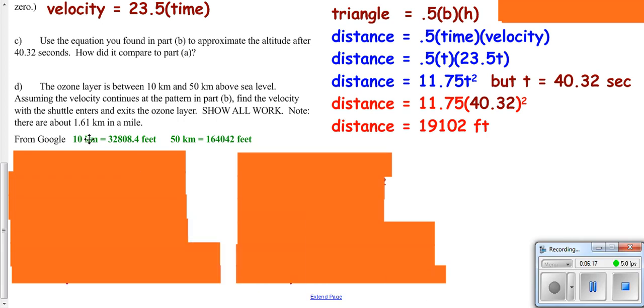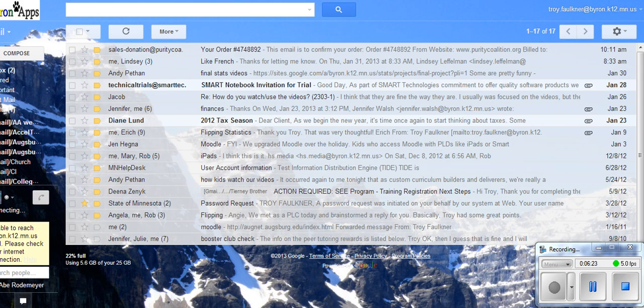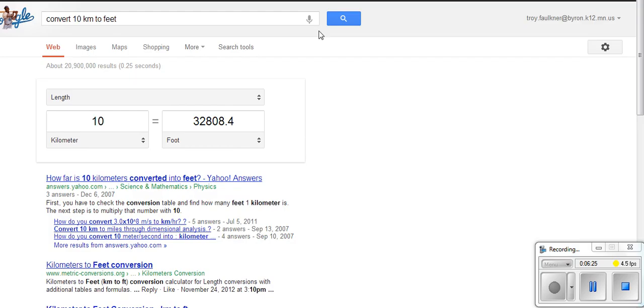The easiest way to convert your units of 10 kilometers into feet is to go to Google, type in convert 10 kilometers to feet, and it gives it to you. If you wanted, you could divide by 1.61 to get miles, then multiply by 5,280 feet per mile, but it's easier to just use Google.